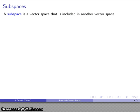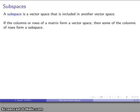Now, we can also introduce something called a subspace. And that is a vector space that is included inside of another vector space. So if I imagine the columns or rows of a matrix forming a vector space, then some of those columns or rows might form a subspace.